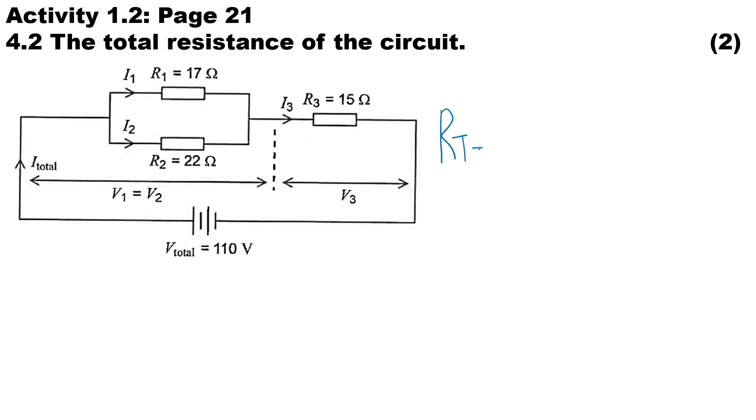Okay, next question 4.2: calculate the resistance total of the circuit. It'll be the resistance of the parallel branch plus the resistor in series, which is called R3. So the resistance of the parallel branch is 9.59 ohms and the value of R3 is 15 ohms, and that gives us a total resistance of 24.59 ohms.